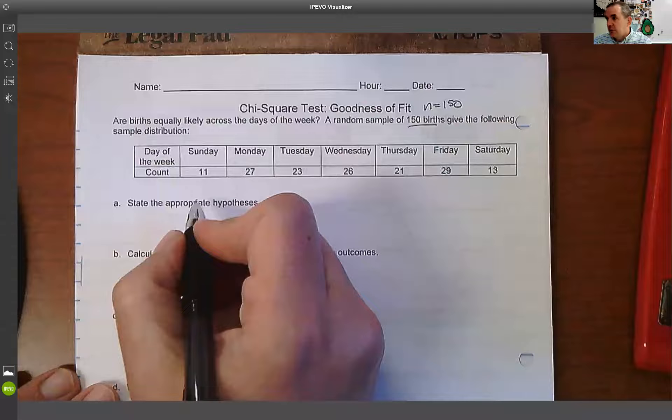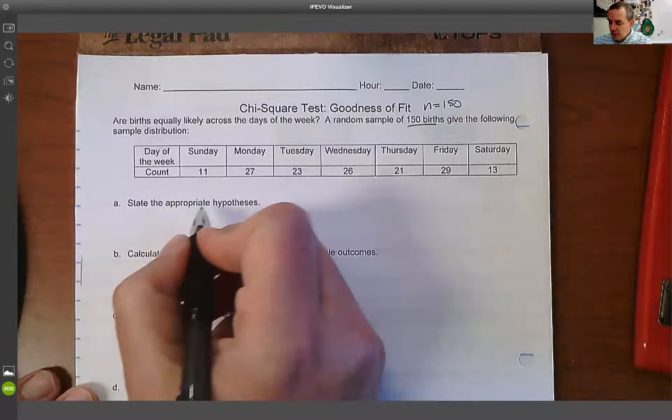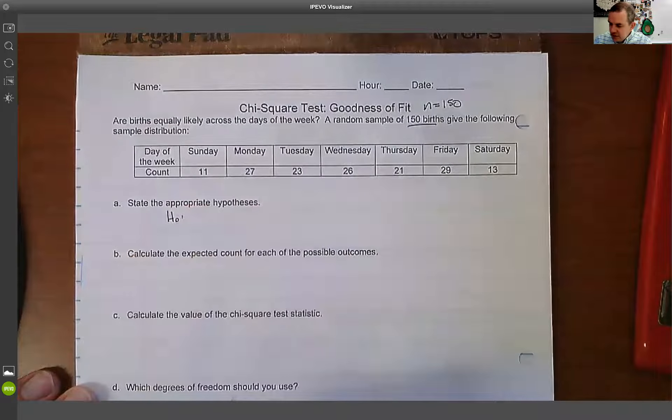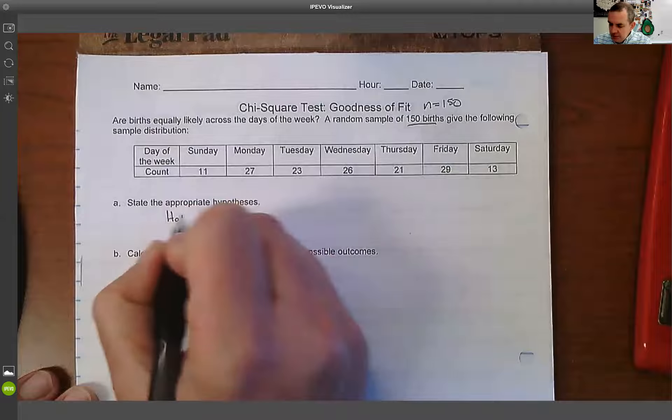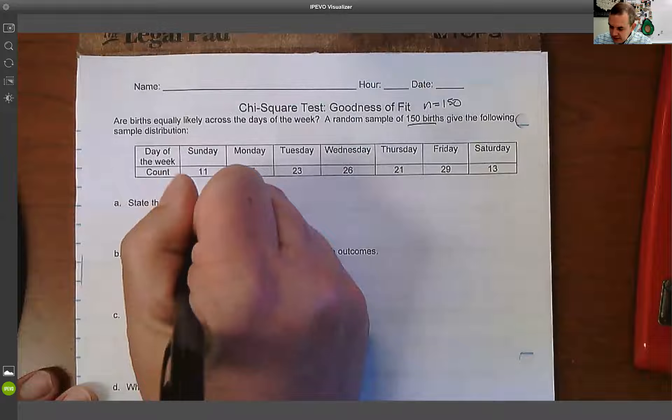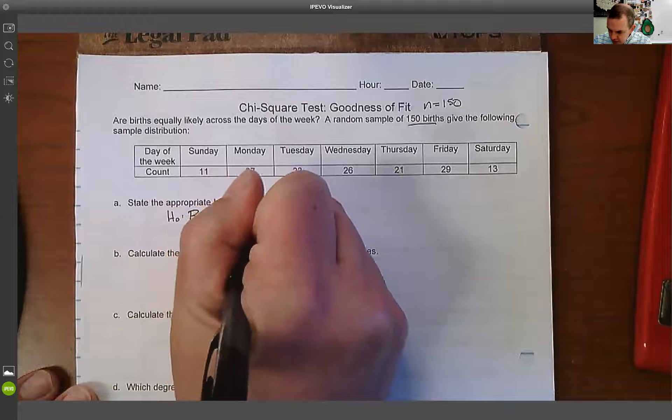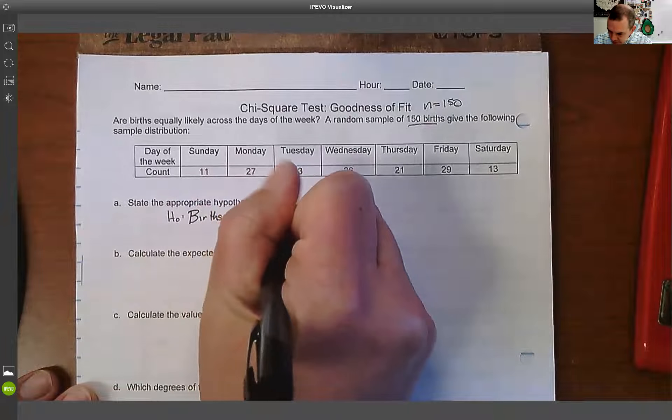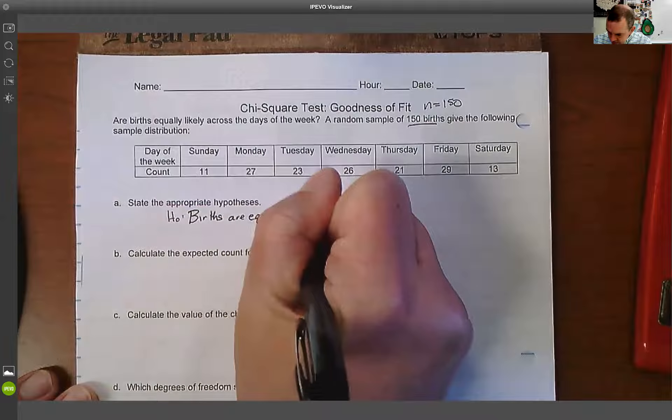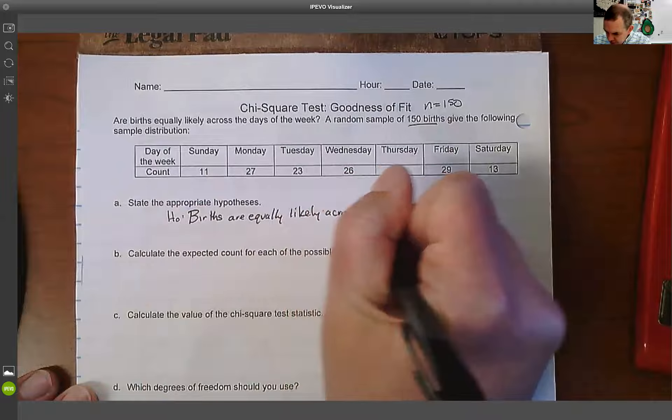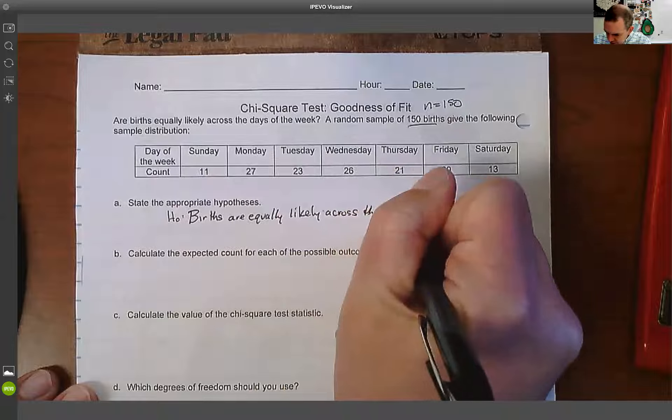So what we're going to do is we're going to go through and we're going to do our hypotheses. So in this case, the way our null hypothesis is going to be set up, we don't have any notation on this one. We are going to say that the null hypothesis is that births are equally likely across the days of the week. So we're going to use the words, the notations.